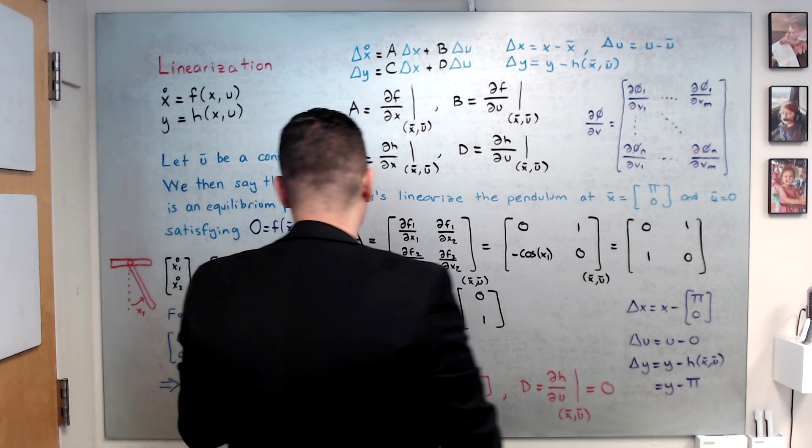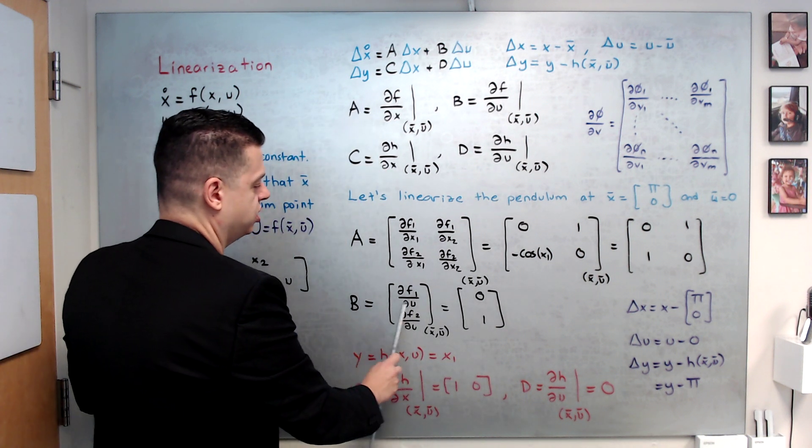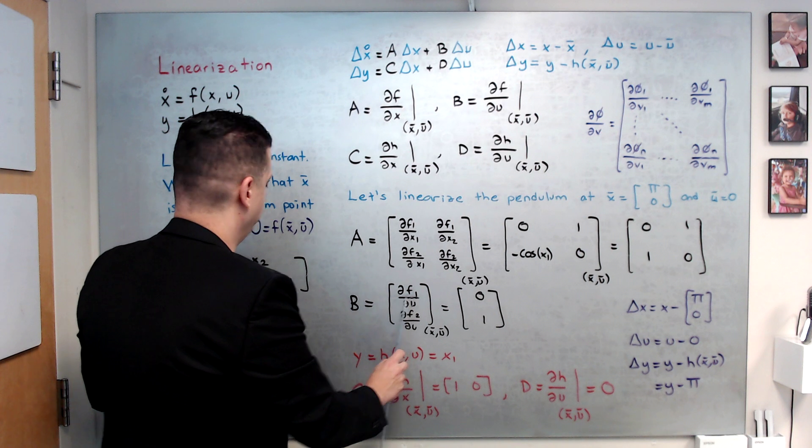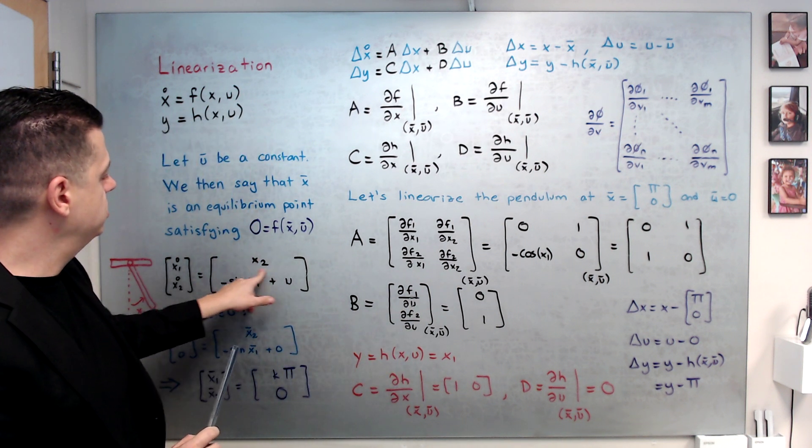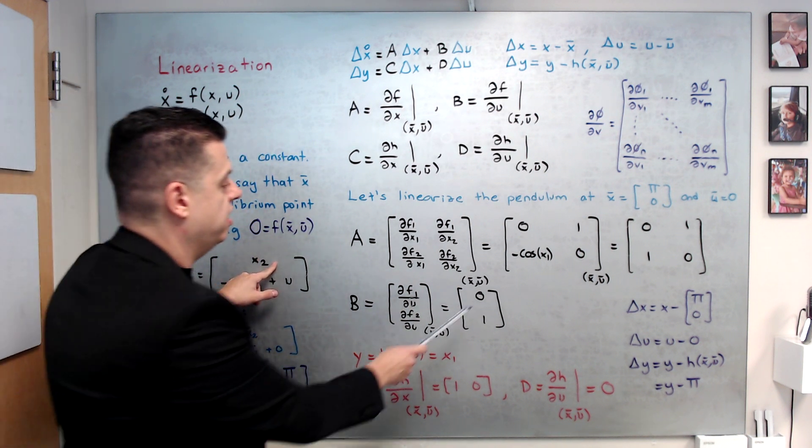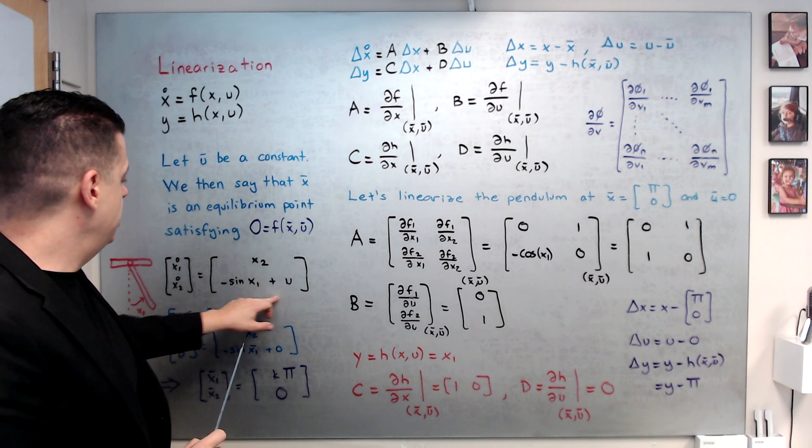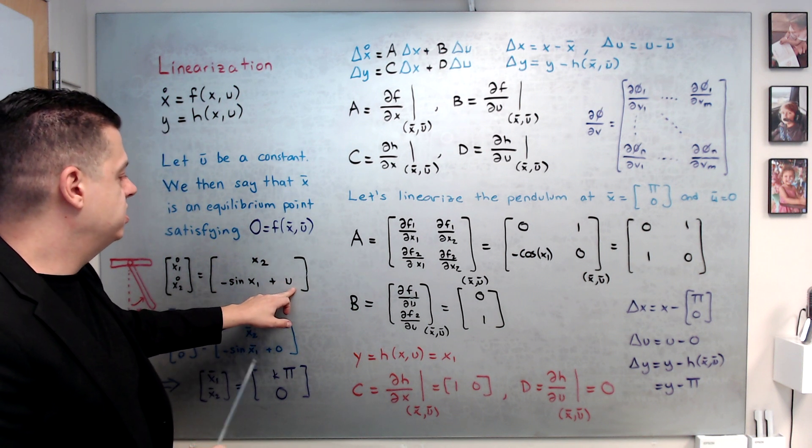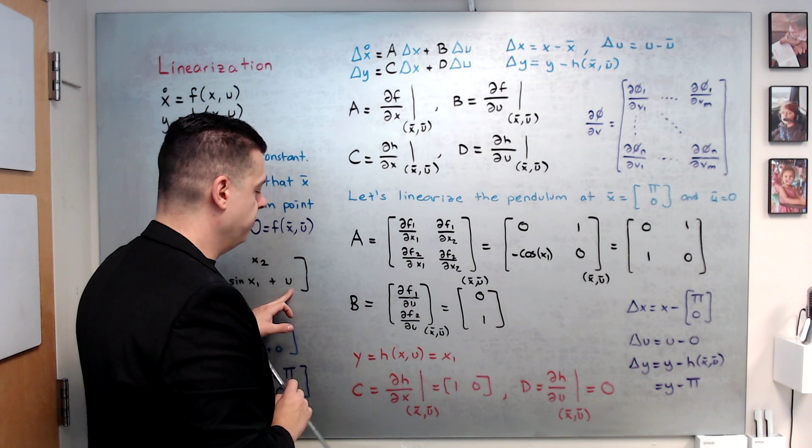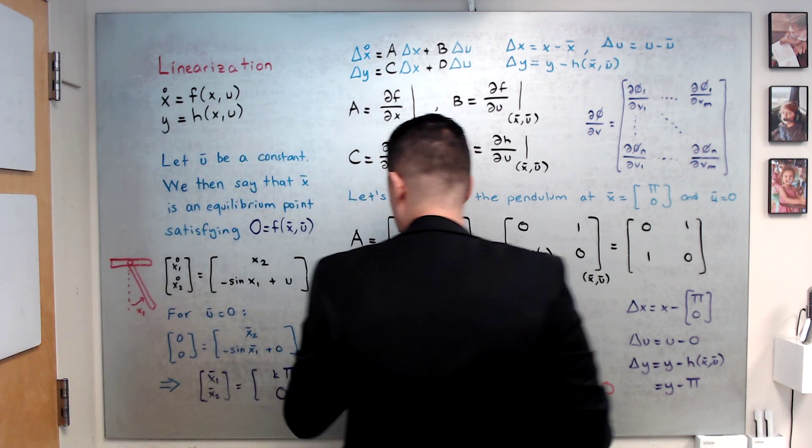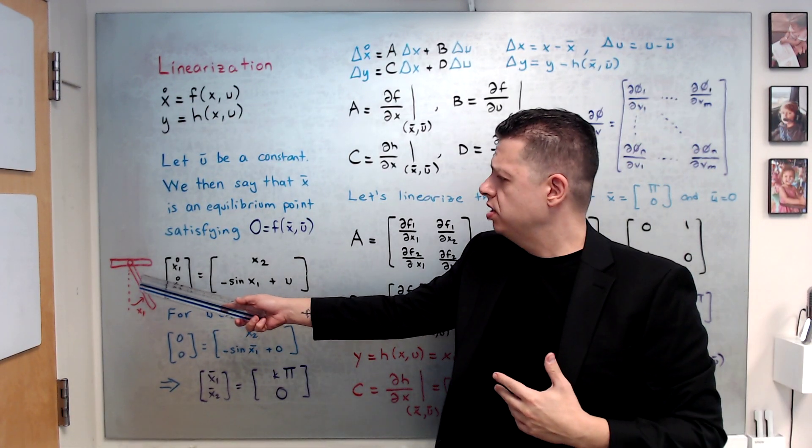And, I am going to do the same thing for b. b is, basically, we are taking this function and evaluating the first one with respect to u. There is no dependence on u on the first equation, so we have 0. And, here u appears here, so df2 over du is 1.